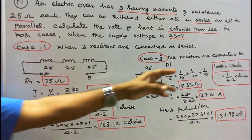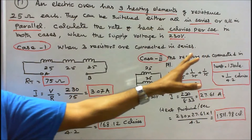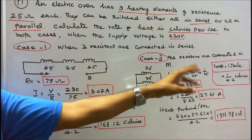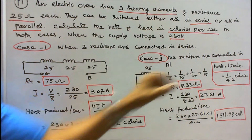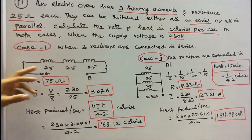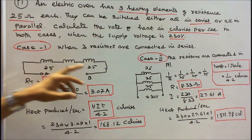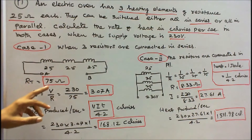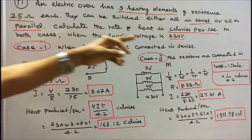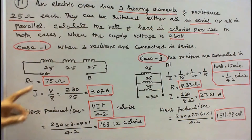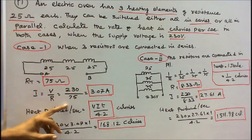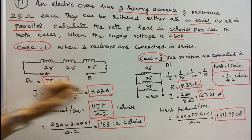We know that 1 watt is equal to 1 joule, and 1 watt is equal to 1 by 4.2 calories. When they are connected in series: 25 + 25 + 25 = 75 ohms. The voltage is 230 volts, so I = V/R = 230 divided by 75 = 3.07 amps.